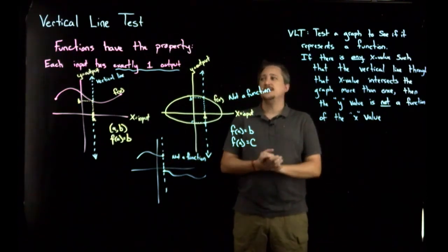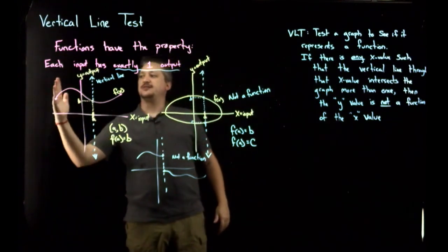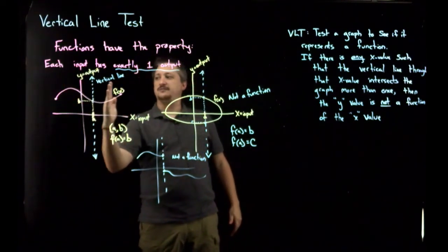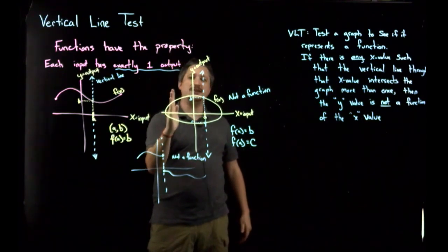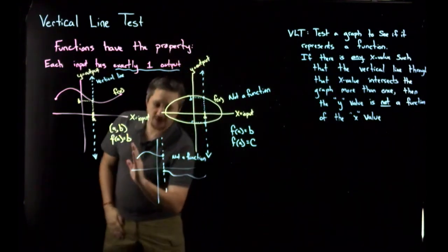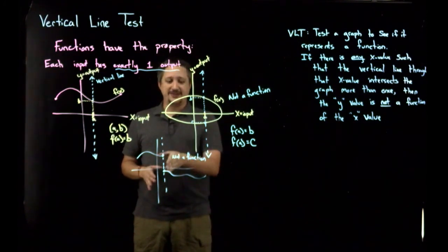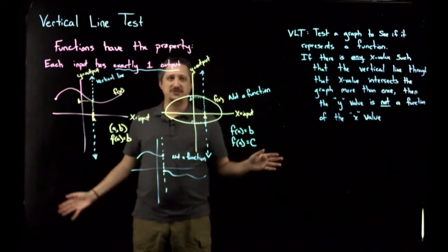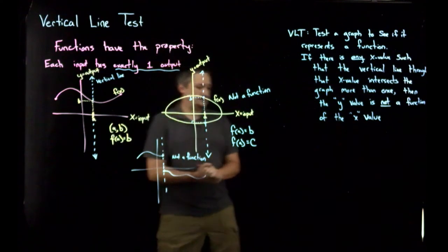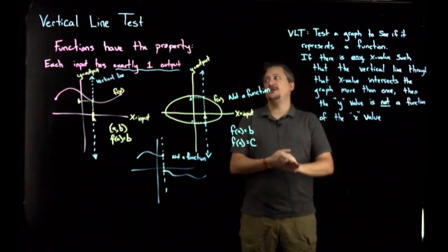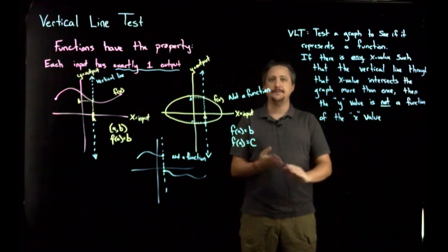A good rule of thumb when doing the vertical line test is to think of it like a radar sweep — you scan from one side to the other. I usually visualize a vertical line going across and seeing if it hits in more than one spot anywhere. As I go across the first curve, I'm always hitting in one spot. When I go across the oval, right away I'm hitting in more than one spot, so it's not a function. Here I'm fine, fine, fine — and then I fail at one spot. I only need to find one spot that fails, and then it's definitely not a function. That is the vertical line test — a good example of geometric reasoning.